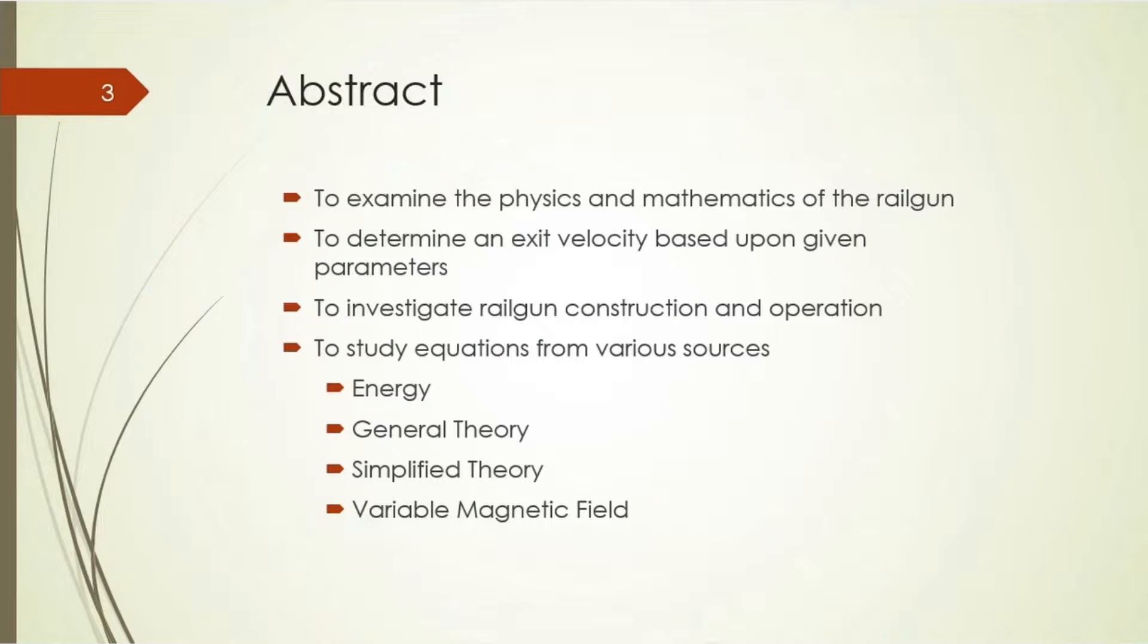So that was the Navy's two railguns, and I performed my report on determining the exit velocity of a simple railgun. I built two prototypes in a laboratory and tested them. I was trying to examine the physics and mathematics of the guns, as well as their construction and operation, to determine that exit velocity using four sets of theories: the energy theory, general theory, variable magnetic field theory, as well as the simplified theory.